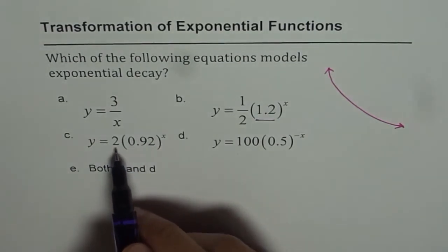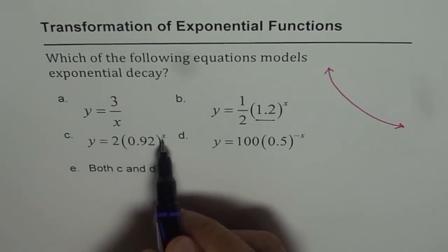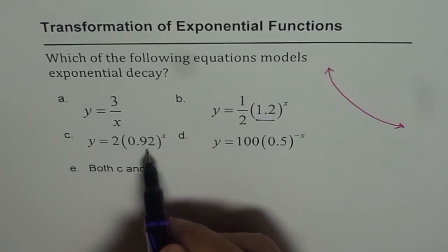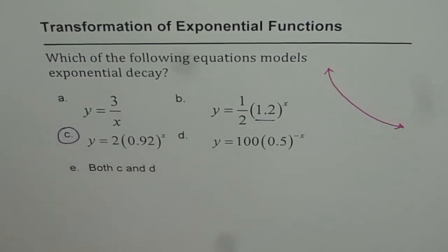Part C is 2 is the initial amount. And here we have 0.92 which is less than 1 to the power of x. Less than 1 when multiplied will give you lower numbers. So this is decay and the decay factor is 8%. So that is one of our answers.